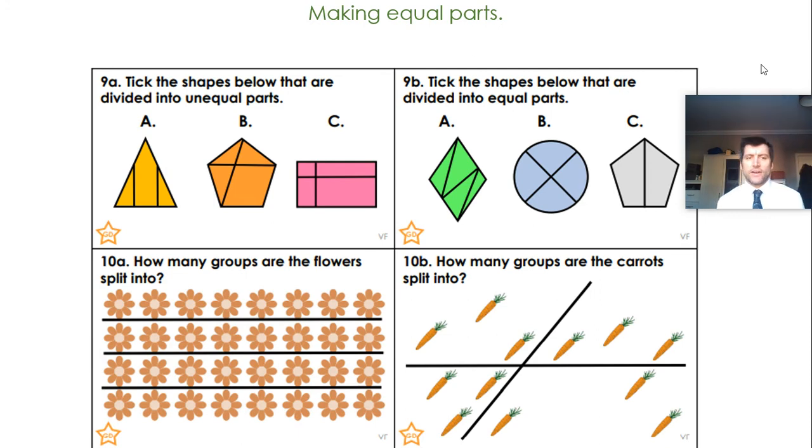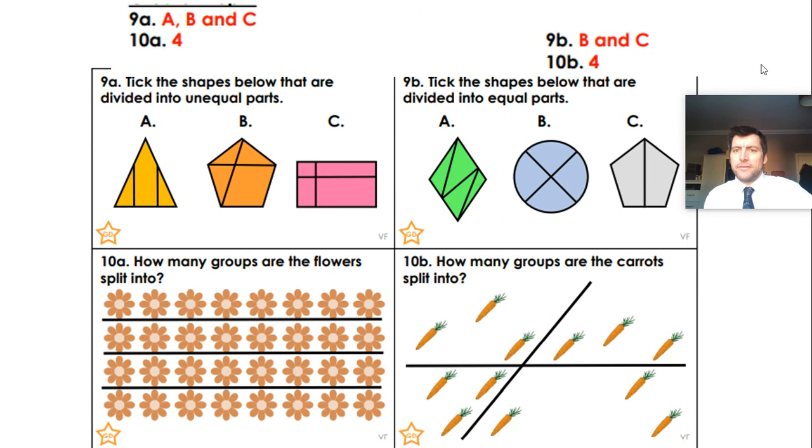So it all links together. Here then for our second set. Pausing now while you read through. Which shapes are equally split, equally divided? And how many groups are the flowers and the carrots split into? The carrots one's really tricky because the lines aren't vertical and horizontal. One of them is a diagonal line. So it's a bit more confusing. We spotted that A, B, and C, all of them are unequal for 9A. B and C for 9B are equal. So our circle split into four equal sections. And our pentagon into two equal sections. The number of groups for our flowers is four. And finally, the number of groups our carrots are split into is four equal groups. Each group's got three in, but it's four equal groups.